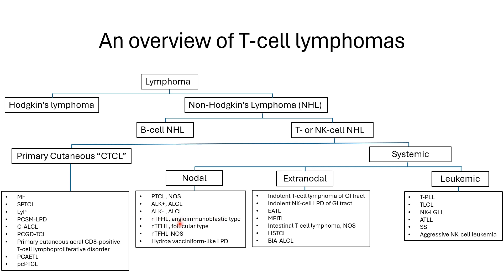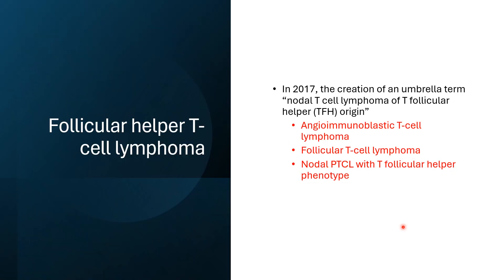They used to call it angio-immunoblastic T cell lymphoma, but now WHO has changed the name to nodal T follicular helper cell lymphoma, angio-immunoblastic subtype. The ICC also calls it follicular helper T cell lymphoma.